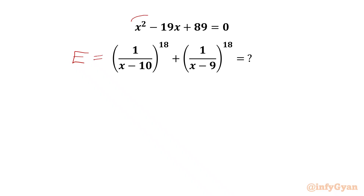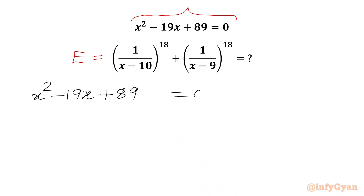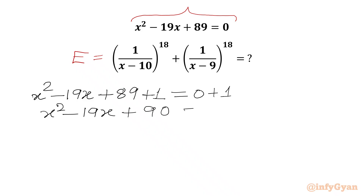We will begin with the given quadratic equation: x squared minus 19x plus 89 equal to 0. Now I will add 1 to both sides. The left hand side will become x squared minus 19x plus 90 equal to 1. Now I can split minus 19x as minus 9x minus 10x, giving x squared minus 9x minus 10x plus 90 equal to 1.